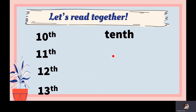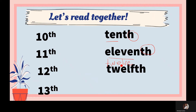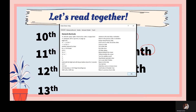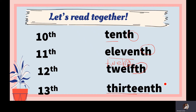Be careful with those spellings. Next is 'tenth' — same spelling as ten, add TH. 'Eleventh' — same spelling as eleven, add TH. For 'twelfth,' the original spelling is T-W-E-L-V-E. Remove V-E, change it to F, and add TH to get 'twelfth.' For 'thirteenth,' same spelling as thirteen, add TH.